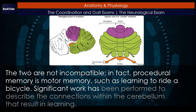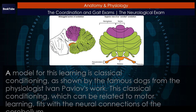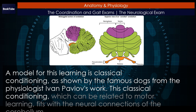Significant work has been performed to describe the connections within the cerebellum that result in learning. A model for this learning is classical conditioning, as shown by the famous dogs from the physiologist Ivan Pavlov's work. This classical conditioning, which can be related to motor learning, fits with the neural connections of the cerebellum.